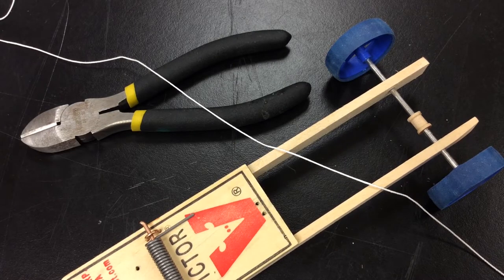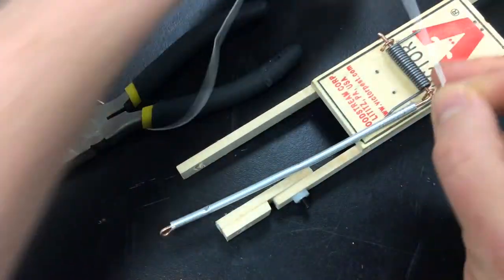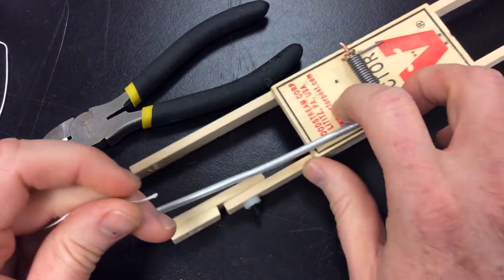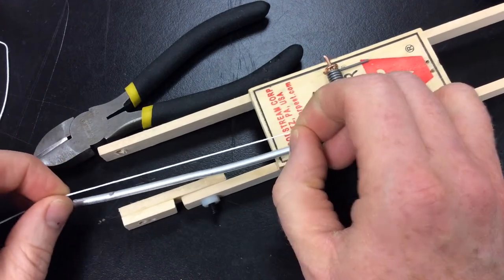In this video I will show how to tie the string to the lever arm of your mousetrap car. This is a pretty critical step because any slippage of the string on the back axle is going to result in a loss of power.